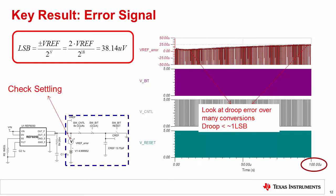In addition to looking at the settling of the reference within each conversion clock cycle, it is important to look at the droop of the reference input voltage after many conversions. This is done to ensure the reference driver circuit has enough bandwidth or low enough output impedance after many conversions. In this example, we look at the reference input voltage droop after 100 conversions. Ideally, the voltage droop will be less than 1 LSB, or 38 microvolts. You can see in this example that the droop is about 25 microvolts, which is less than 1 LSB.